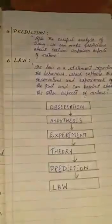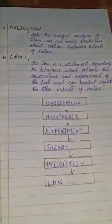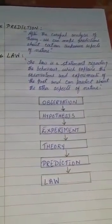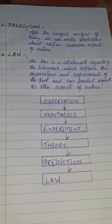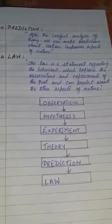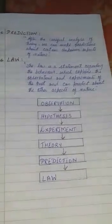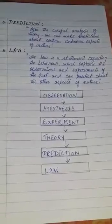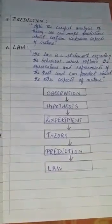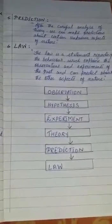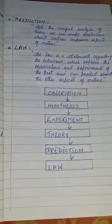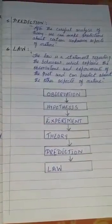Number four: Theory — after the successful verification of an assumption through experimentation, it becomes a theory. Number five: Prediction — after careful analysis of a theory, we can make predictions about certain unknown aspects of nature. Number six: Law — a statement regarding behavior which explains past observations and experiments and can predict other aspects of nature. These steps are: observation, hypothesis, experiment, theory, prediction, and law.